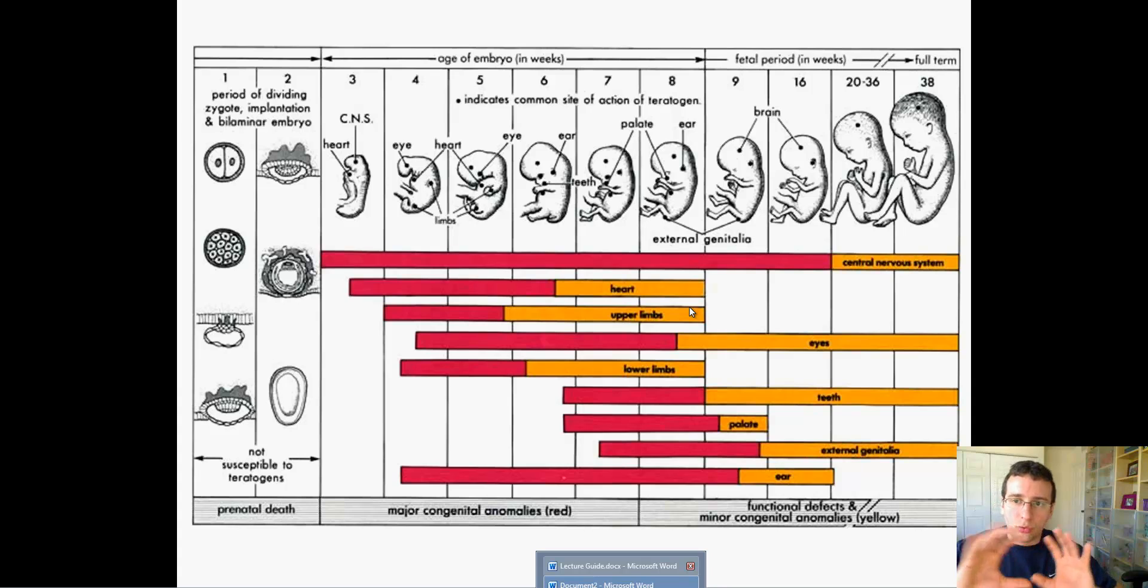Sometimes the fetus grows because the implant is the wrong way. It actually grows wrong. That's what we call the functional defects when the baby grows in an incorrect way. Sometimes it grows misplaced. Remember that the head has to face down in order for the birth to happen normally. So sometimes the fetus fails because it grows wrong.